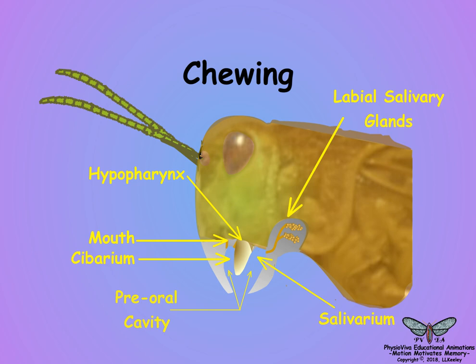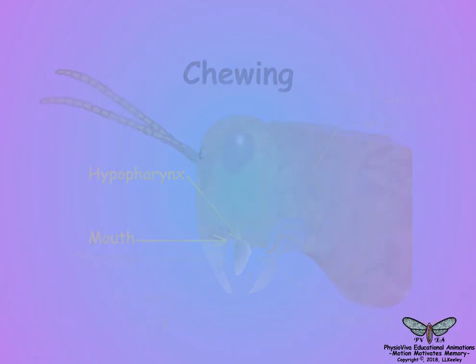Food is chewed and mixed with saliva, then forced by the maxillae and hypopharynx up into the mouth for swallowing. In the next scene, we will show some of the mouthpart adaptations that insects have developed that allow them to feed on such wide varieties of food.